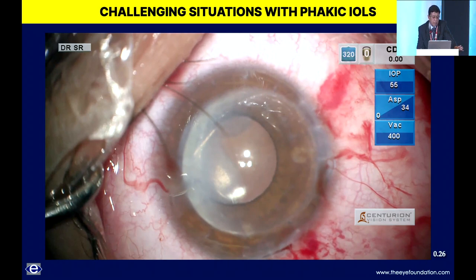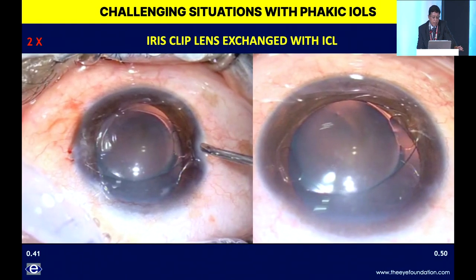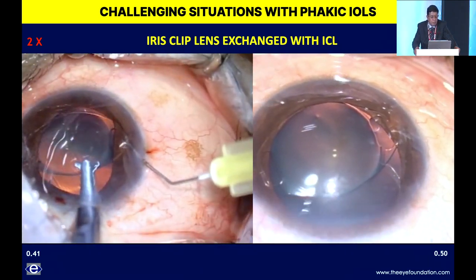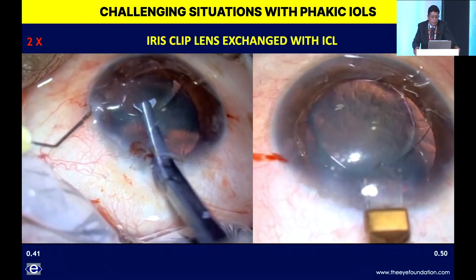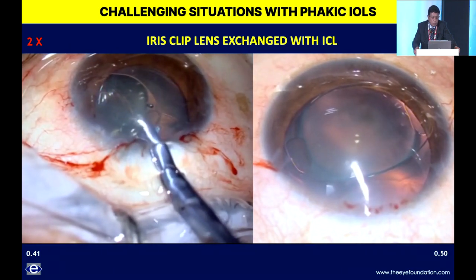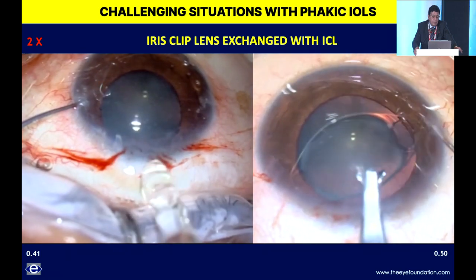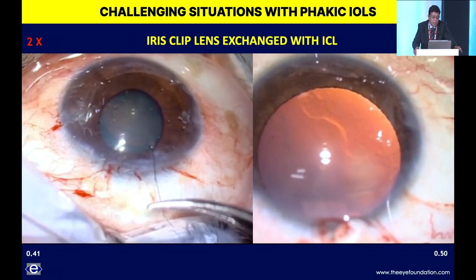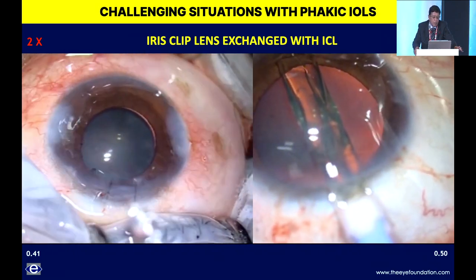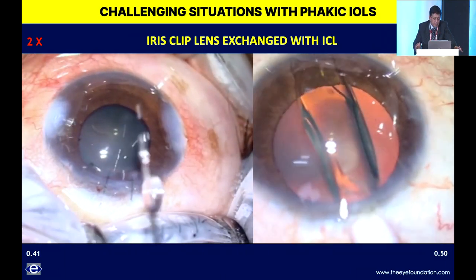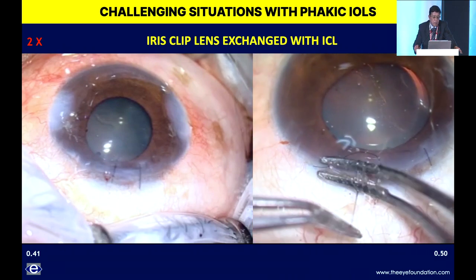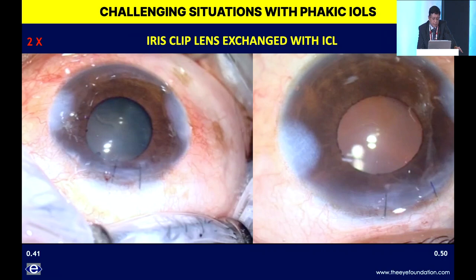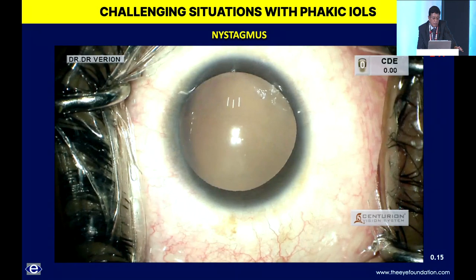Post-penetrating keratoplasty cases with high astigmatism can be rehabilitated with a toric phakic IOL once the cornea is stable and sutures are out. Surgery must be extremely gentle to protect the tenuous endothelium. This is a great way to rehabilitate significant residual refractive errors after PK. The speaker started with phakic iris clip lenses in 2004 but discontinued due to progressive endothelial cell loss—a patient with excellent refractive outcome had endothelial count drop below 1,500, necessitating exchange to a posterior chamber phakic IOL.